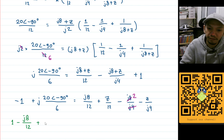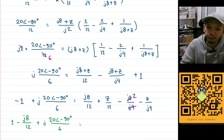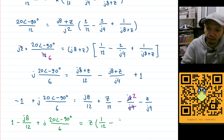Moving j8 over 12 to the left gives: 1 minus j8 over 12 plus j times 20 angle minus 90 degrees divided by 6. Now we factor out Z on the right: Z times (1 over 12 minus 1 over j4). So we can finally isolate Z.